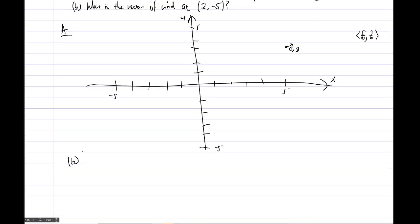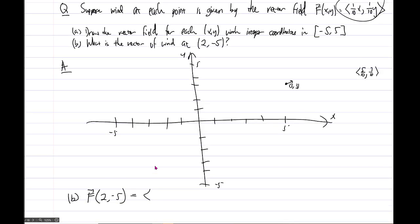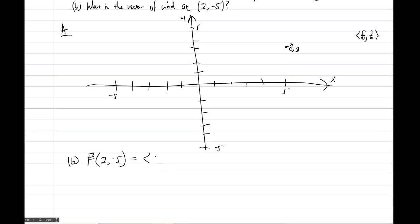what is the vector of wind at 2 comma negative 5? So we just need to find f of 2 comma negative 5. And you probably already found this before if you filled in all of the arrows over here anyway. But this will be, let's see, what was it? 1 tenth x comma 1 tenth y. So 2 tenths, negative 5 tenths. Yeah, so it's,